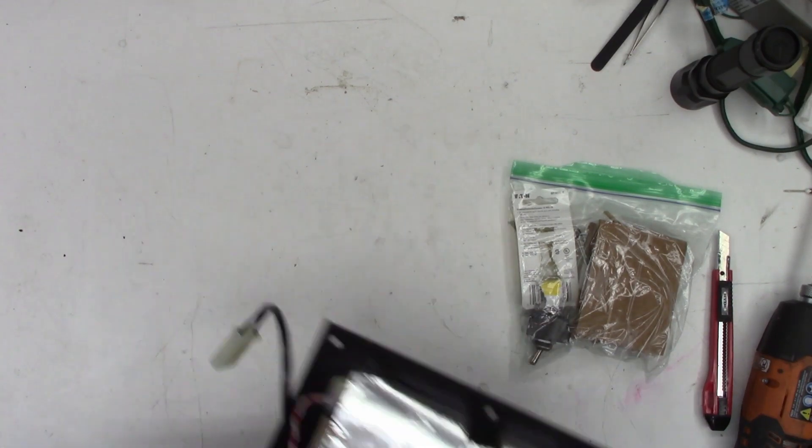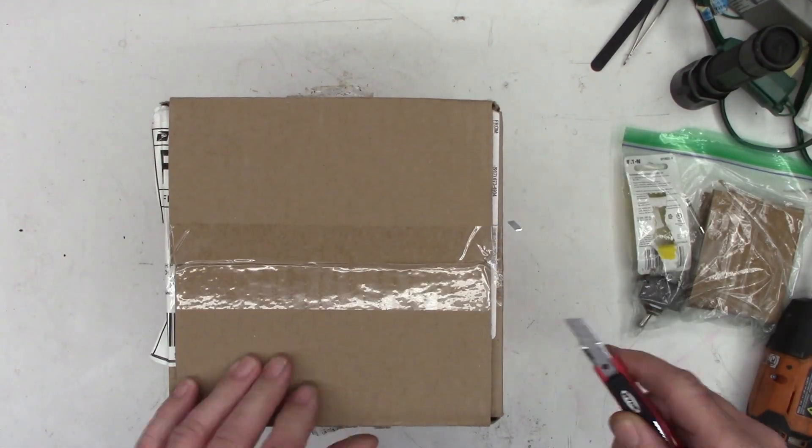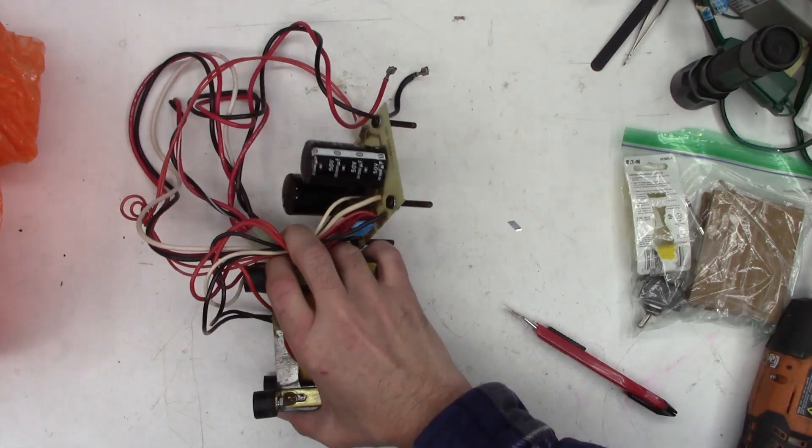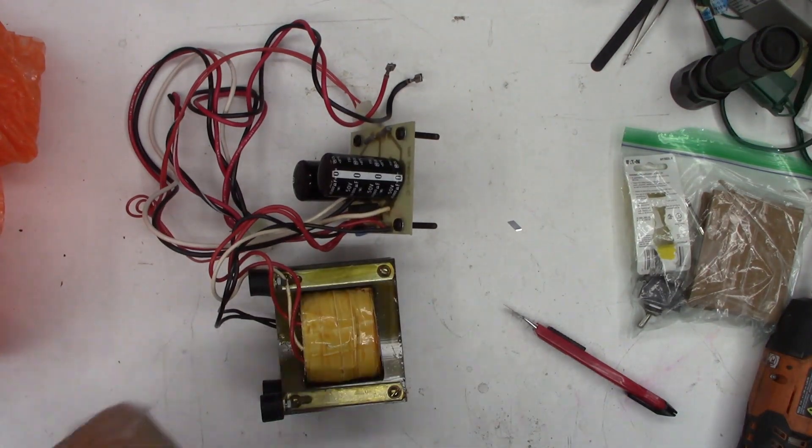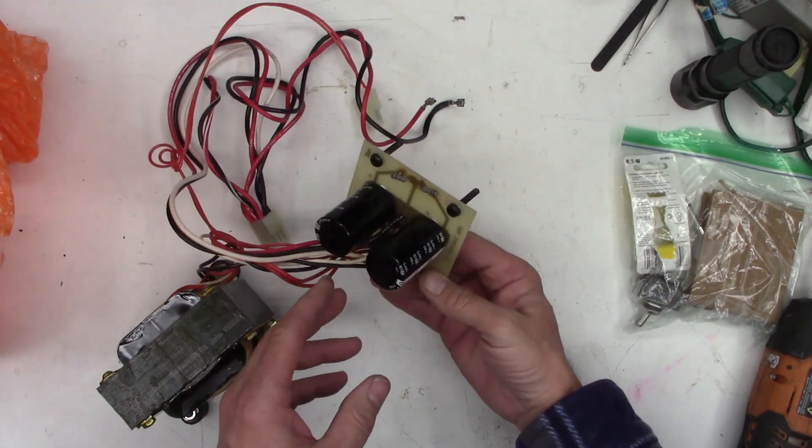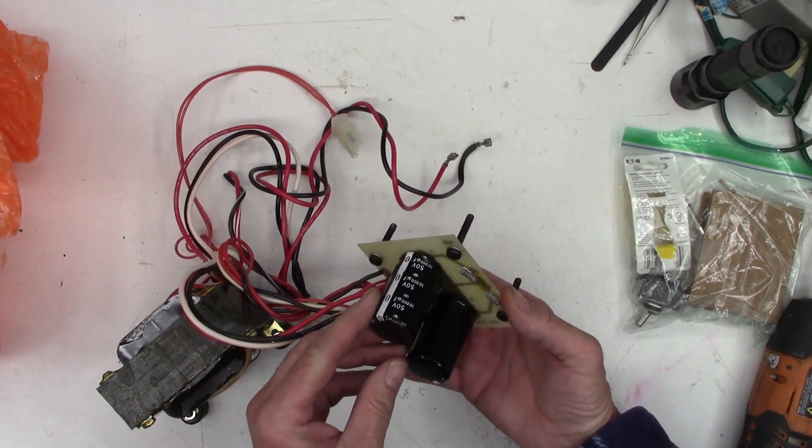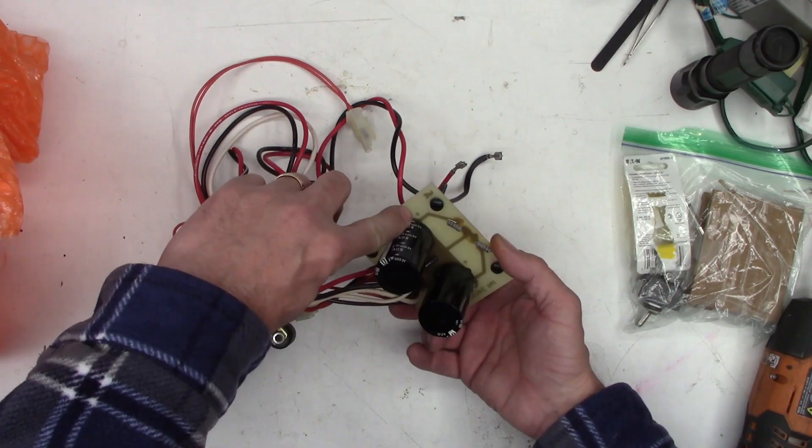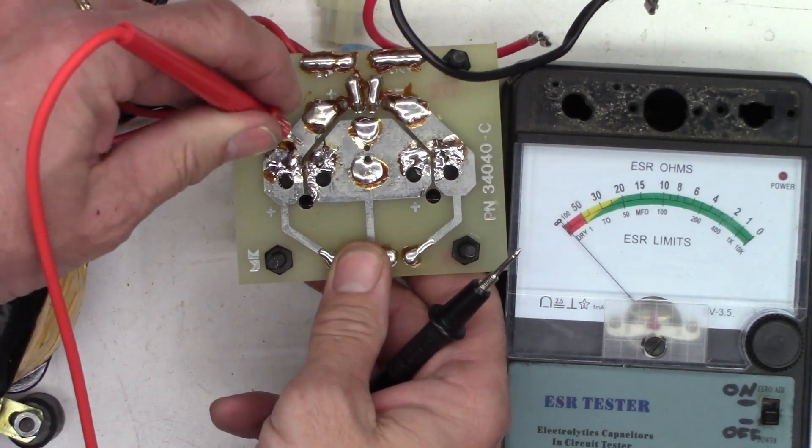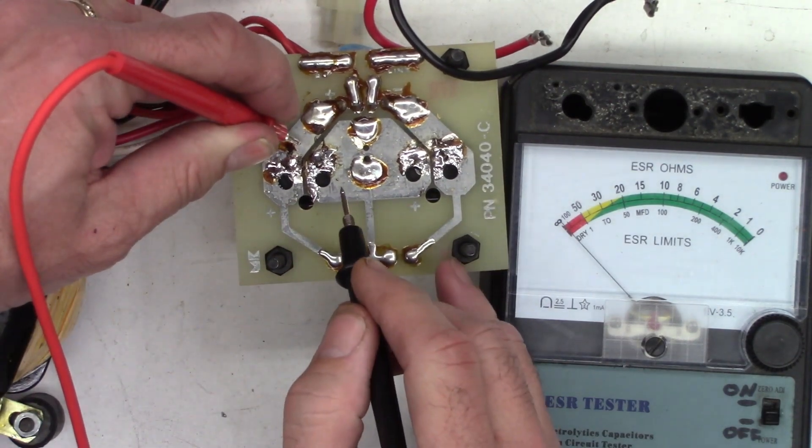So I can only assume that this is going to be the power supply. And yes, it is. There is the power supply. So we've got the main power transformer. We've got the filter caps. And from what I can see, one is in backwards. You can see the positive right here. And the negative is attached to that. So we'll do both an ESR check and an ohm check on these capacitors.